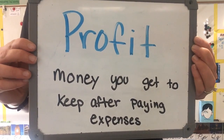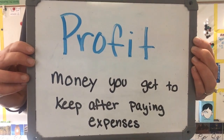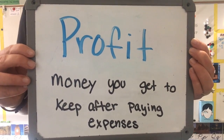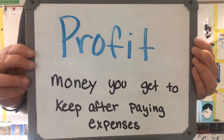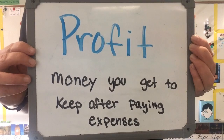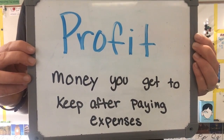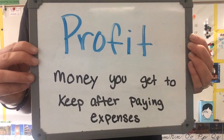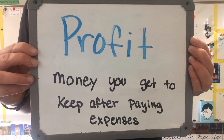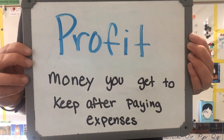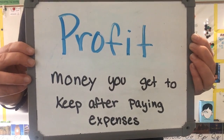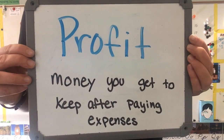Our last vocabulary word is profit — this is the money you get to keep after paying for all of your expenses. We pat our pocket when we talk about profit, because that's the money we get to put into our bank account or wallet. In the cookie example, we take the revenue — how much people paid us — and subtract our expenses to get profit. For the lawn mowing business, we take our revenue, subtract the cost of the lawn mower and gasoline, and that's our profit.